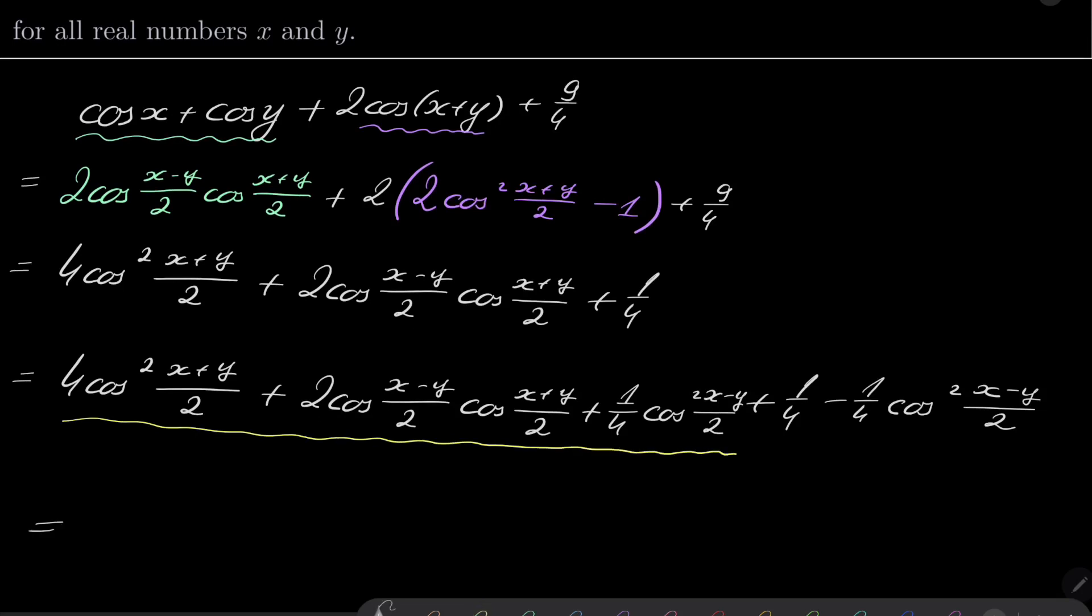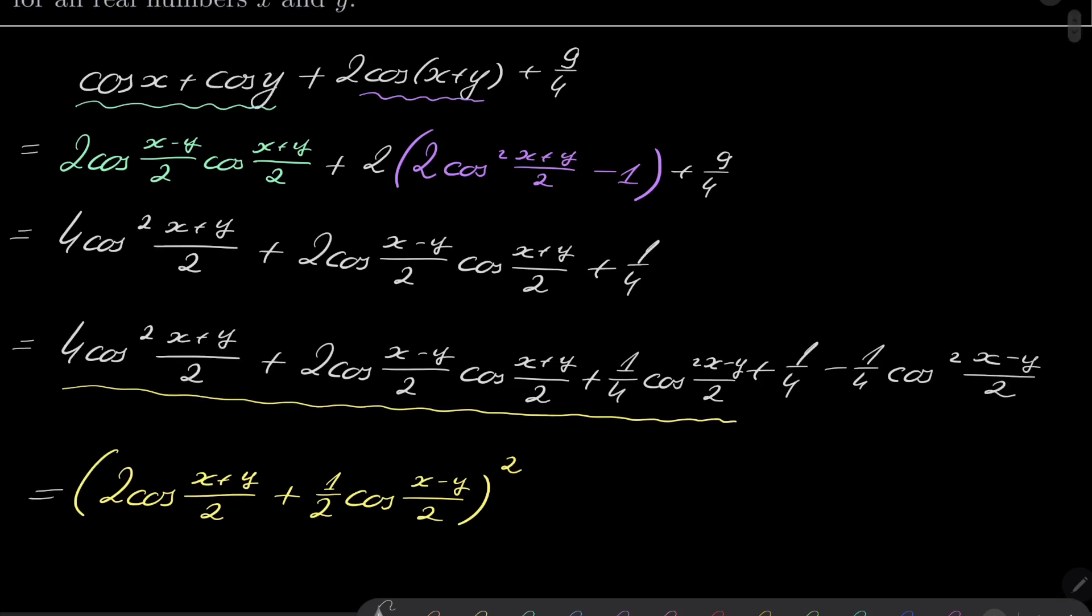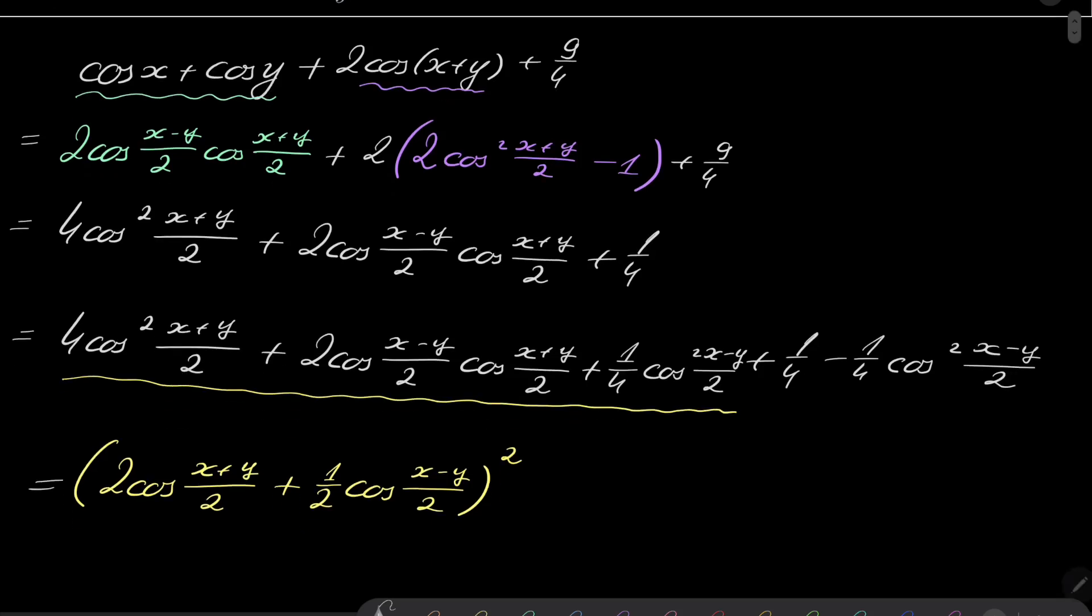And now notice that the first three terms can be written as 2 cosine of (x plus y) over 2 plus 1 half cosine of (x minus y) over 2, everything squared. And the last two terms can be written as plus (1 minus cosine squared of (x minus y) over 2) over 4.